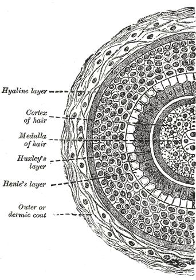Hair is a protein filament that grows from follicles found in the dermis. Hair is one of the defining characteristics of mammals. The human body, apart from areas of glabrous skin, is covered in follicles which produce thick terminal and fine vellus hair.